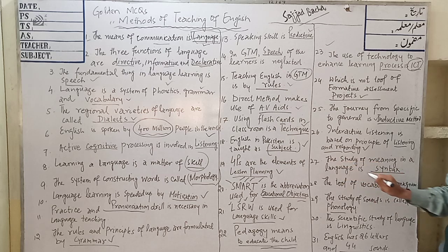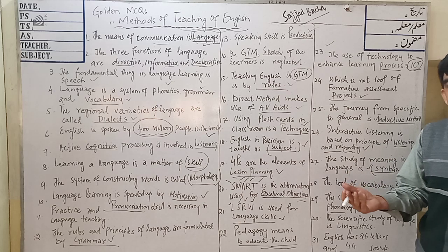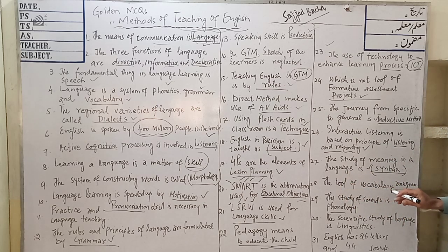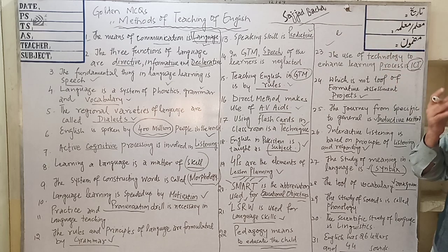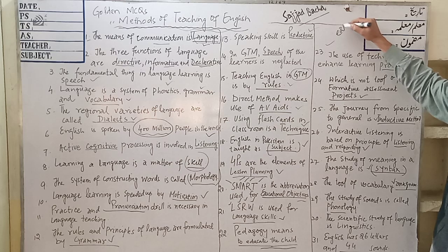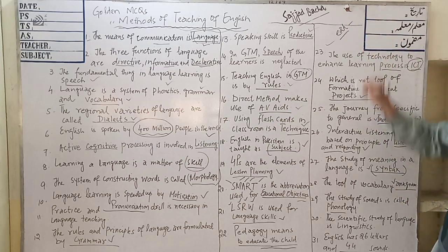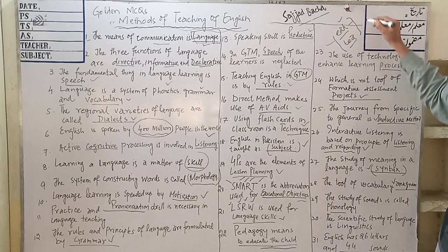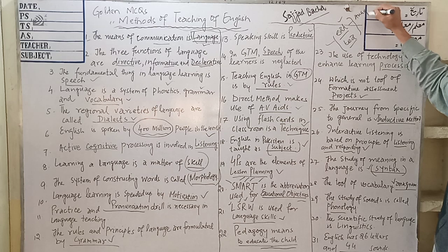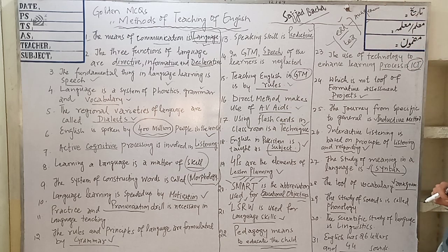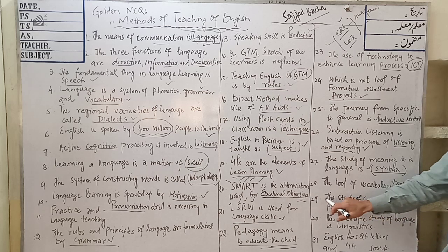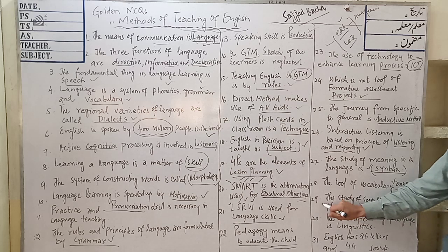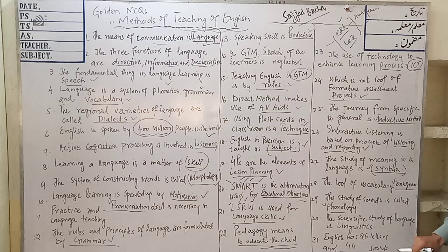MCQ 27: The study of meaning in a language is called semantics. MCQ 28: The tool of vocabulary is the anagram. An anagram means rearranging letters of a word — for example, the word E-A-T can be rearranged into T-E-A. So the change of 'eat' into 'tea' is called an anagram, and the anagram is a tool of vocabulary. MCQ 29: The study of sound is called phonology, which is a branch of phonetics.